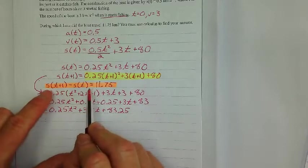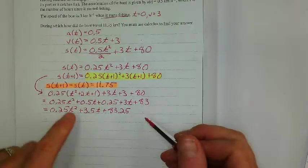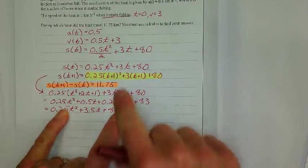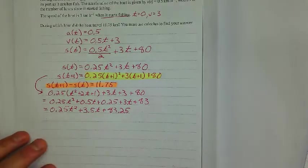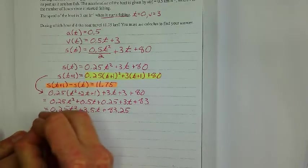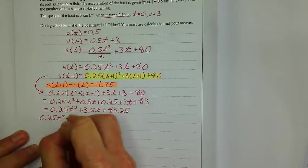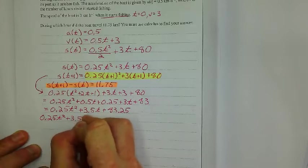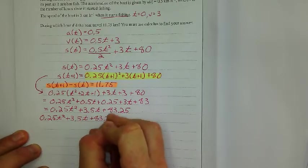All right, now I just highlighted this step because this is the doozy right here. So what I'm saying is that this expression minus this expression will give me 11.75. So we're going to have to write that. So here's s of t plus 1. So 0.25t squared plus 3.5t plus 83.25 minus, I'm going to have to put this in brackets, minus 0.25t squared plus 3t plus 80,